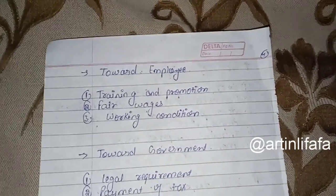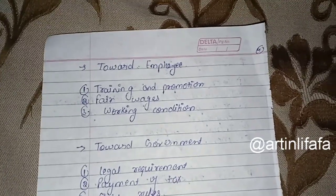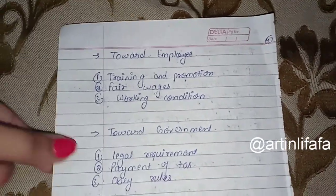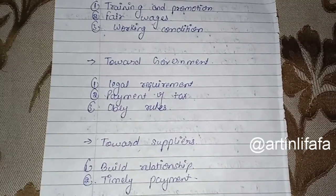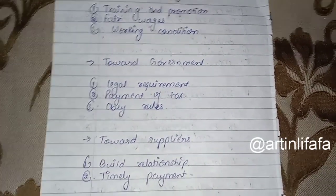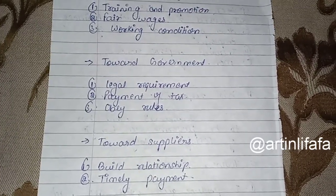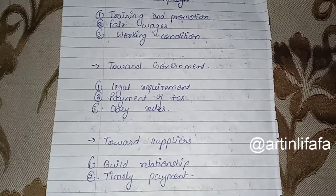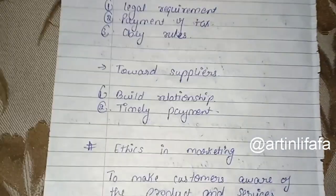Towards employees, our ethics include: providing training and promotion, giving fair wages, and providing good working conditions so they can work better and their productivity increases. Towards government: fulfill legal requirements, make timely payment of taxes, and obey rules made by the government for organizations.